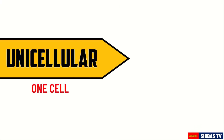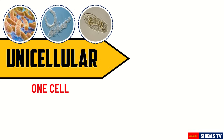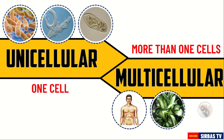If a living thing is made up of one cell, they are called unicellular. Examples of unicellular organisms are bacteria, amoeba, and paramecium. On the other hand, if they are made up of more than one cell, they are called multicellular. Examples are humans, plants, and animals.